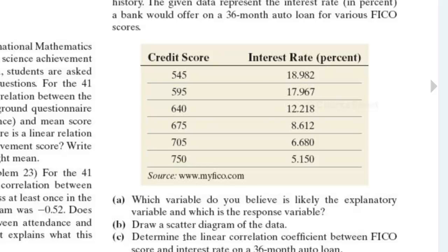Once you have the data keyed in, Part A asks which variable is likely the explanatory variable and which is the response variable. I think it makes the most sense that the credit score would be the explanatory variable or X value, and the interest rate would be the response variable or Y value. When you go to get a loan, they look at your credit score first, so the credit score determines the rate you'll get. We regard X values as input values and Y values as output values.